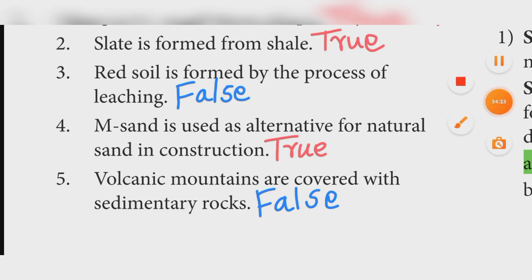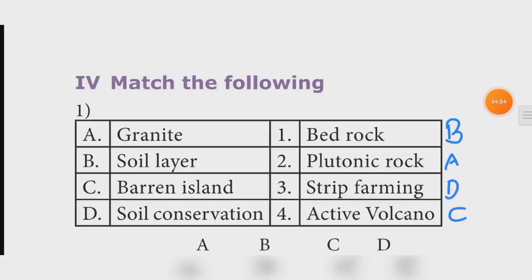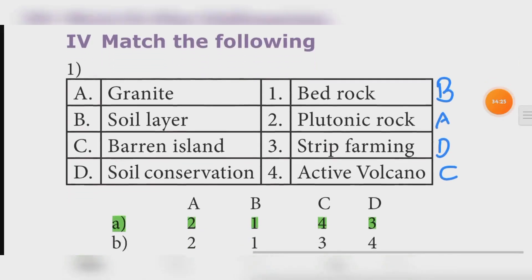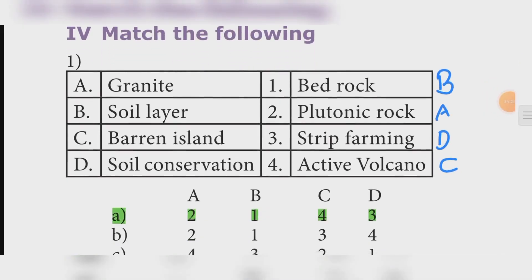Match the following. Dronite — Plutonic rock. Soil layer — Bedrock. Barren Island — Active volcano. Soil conservation — Strip farming.